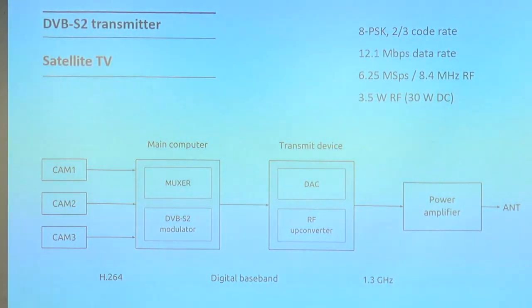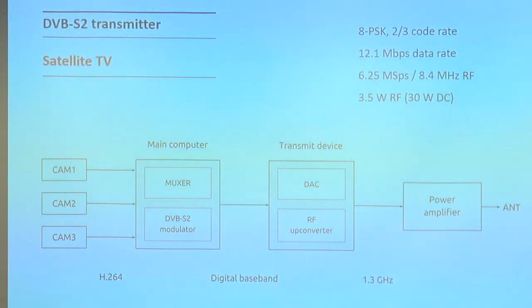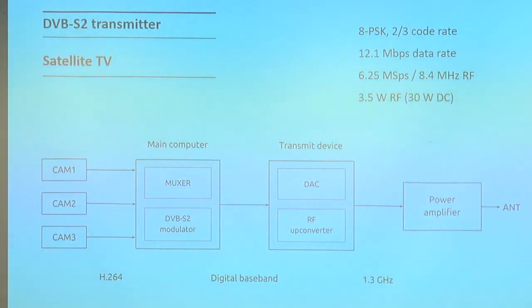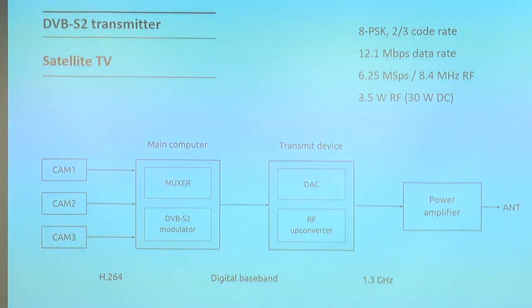This slide shows a functional diagram of the transmitter on Nexo. Starting from the left, we have three cameras capturing HD video — 1280 by 720, not full HD — which encode the video into a compressed stream at about 3.8 megabits per second per camera. The compressed video is sent over USB network connection to a main computer, which multiplexes the three camera streams into one transport stream — a standard data format widely used in the broadcast industry.